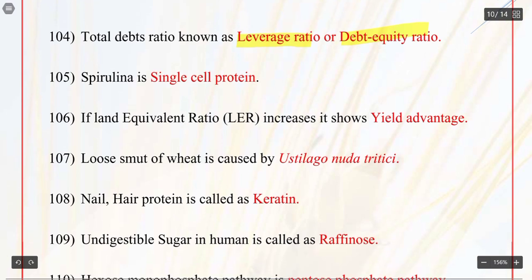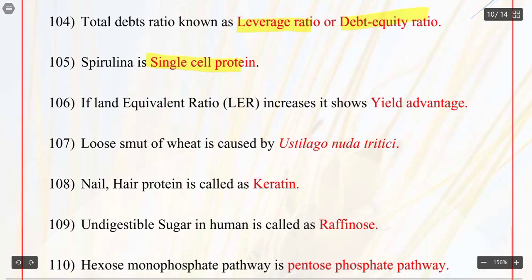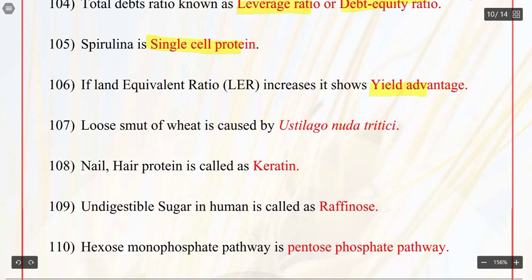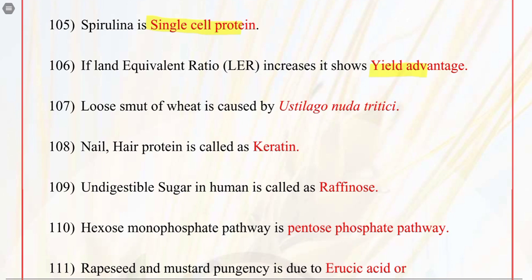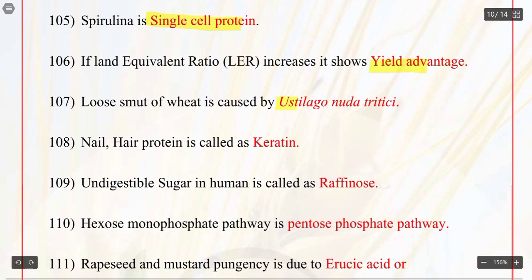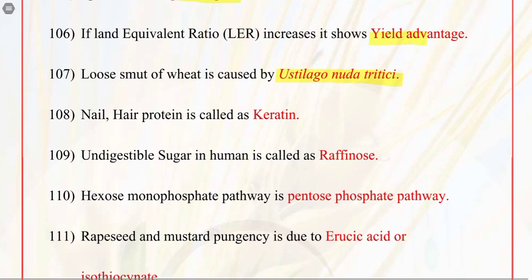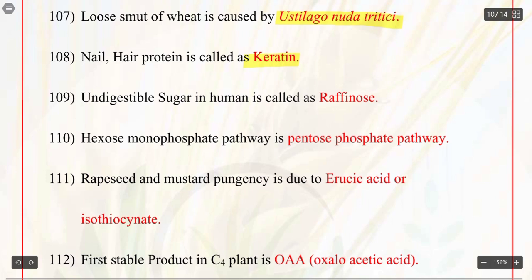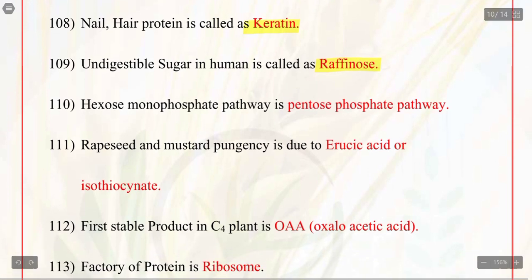Q105. Spirulina is a single cell protein. Q106. If land equivalent ratio increases, it shows yield advantage. Q107. Loose smut of wheat is caused by Ustilago nuda tritici. Q108. Hair and nail protein is called as keratin. Q109. Undigestible sugar in humans is called as raffinose. Q110. Hexose monophosphate pathway is also the pentose monophosphate pathway.